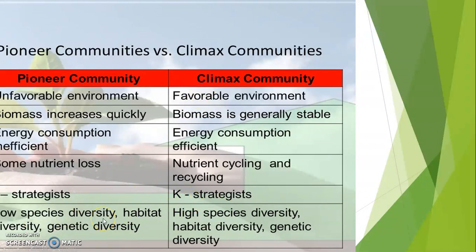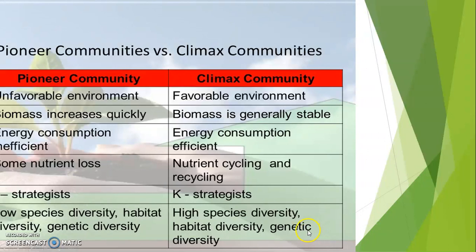Pioneer community has low species diversity, habitat diversity, and genetic diversity, because they follow R-selected strategy. In contrast, climax community has high species diversity, habitat diversity, and genetic diversity. There are many differences between pioneer and climax communities which we can continue in this comparison table.